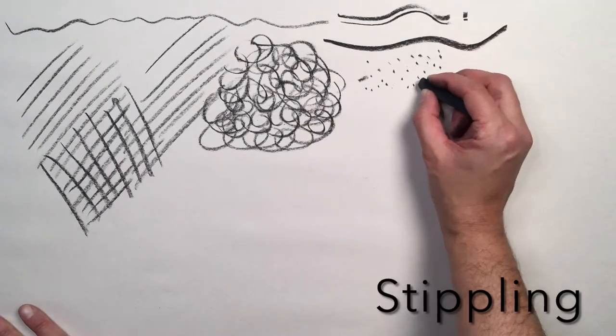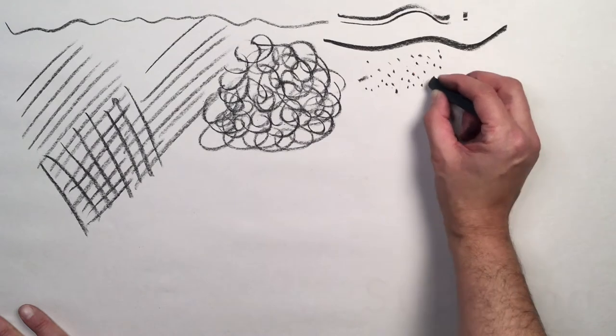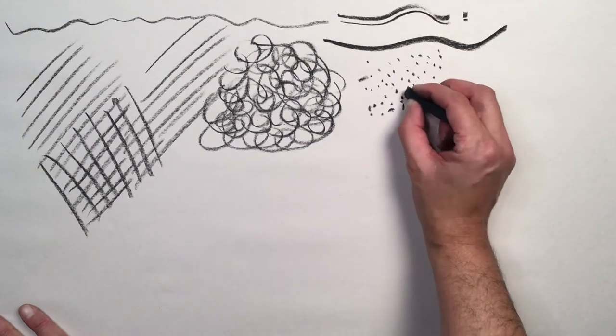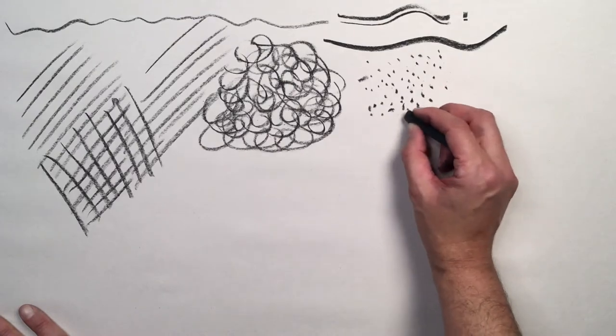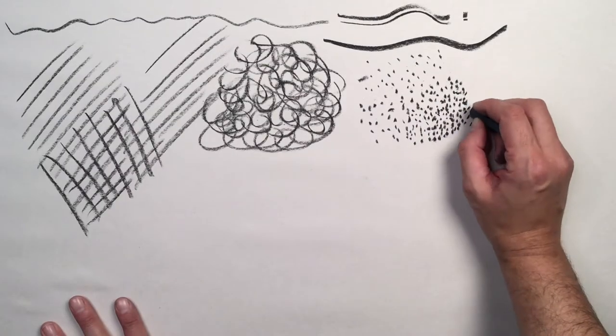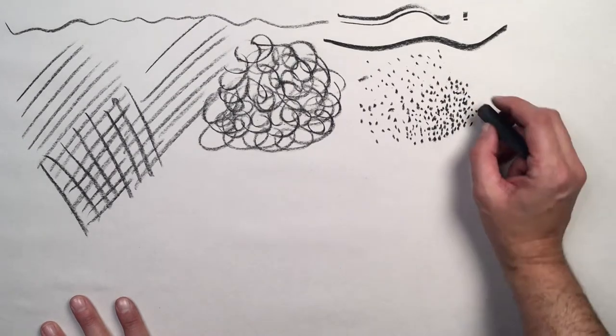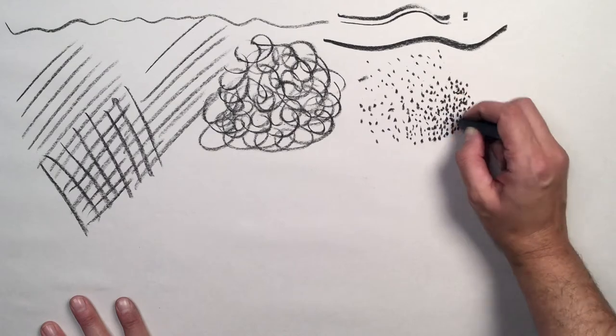Now I'm experimenting with stippling in charcoal and stippling is done just by placing tiny dots like I'm doing here and you might notice that if the dots are a little bit closer together that area might seem a little bit darker than the areas where the dots are spaced further apart.